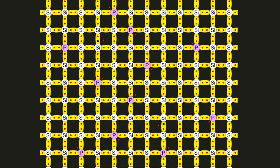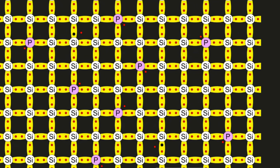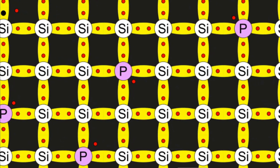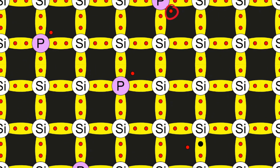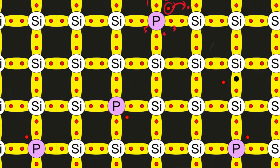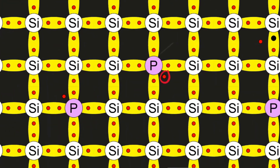For an N-type semiconductor, the foreign substance that is added has five valence electrons. An example here is phosphorus. When you add phosphorus into the structure, wherever phosphorus bonds with the silicon atoms, there is one extra electron. Because phosphorus has five valence electrons, only four are involved in bonding, so there will be one electron left over. This electron can easily become a free electron. What we have done here is create a lot more free electrons compared to a pure semiconductor.